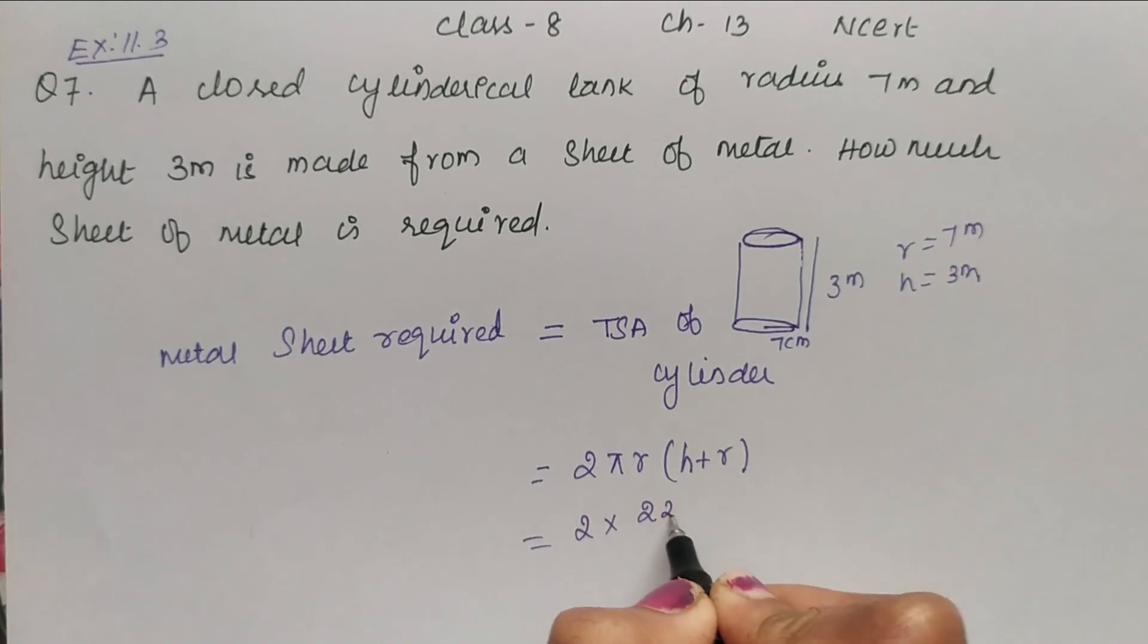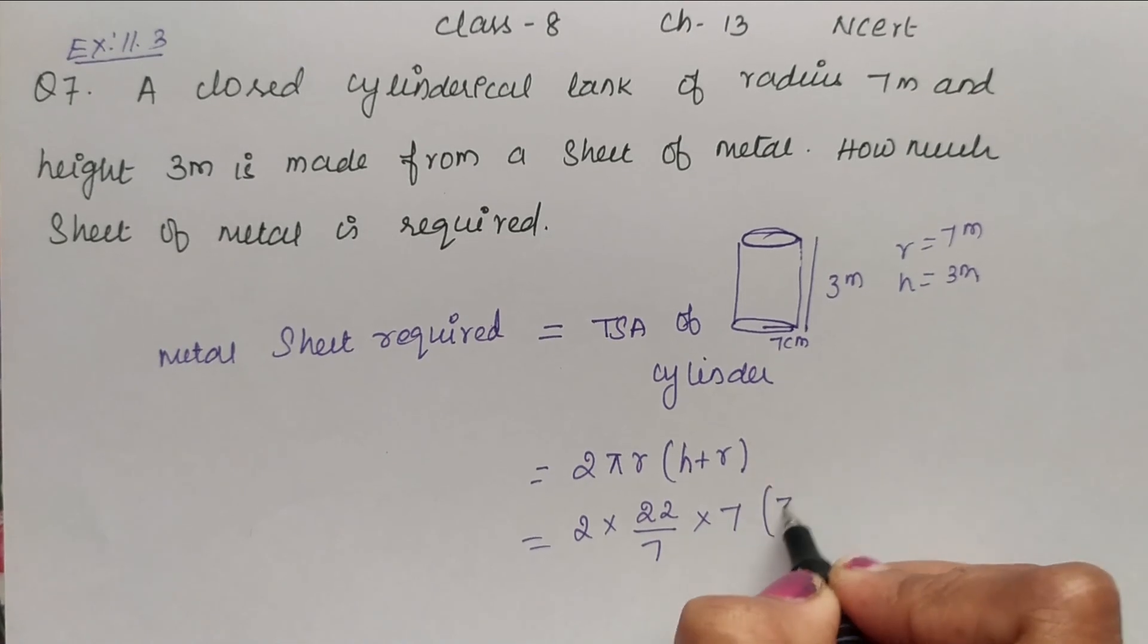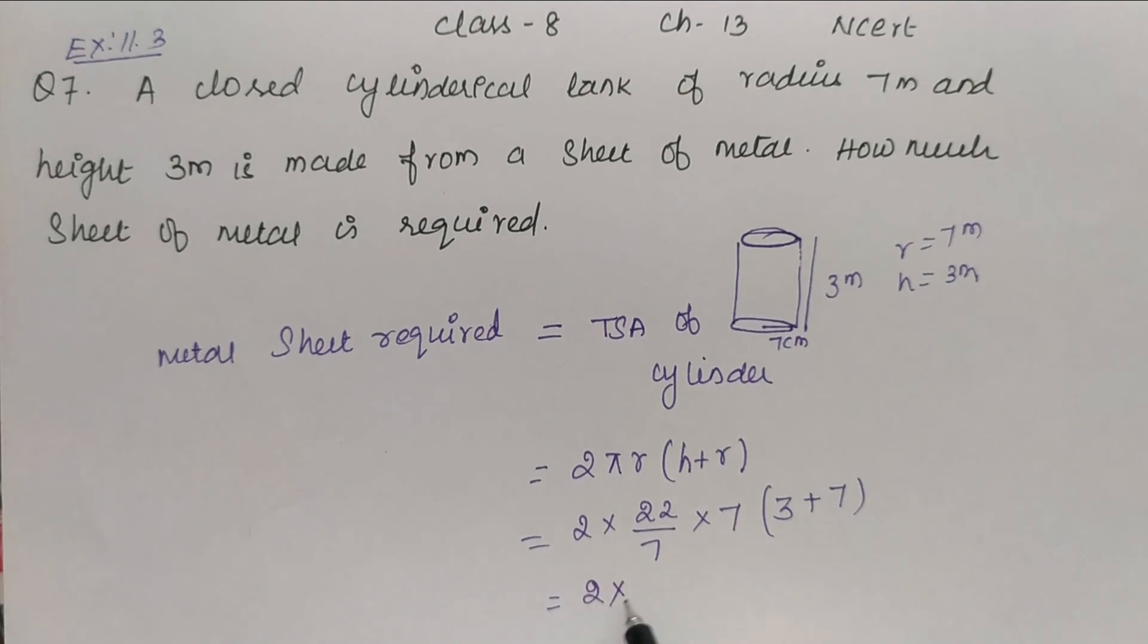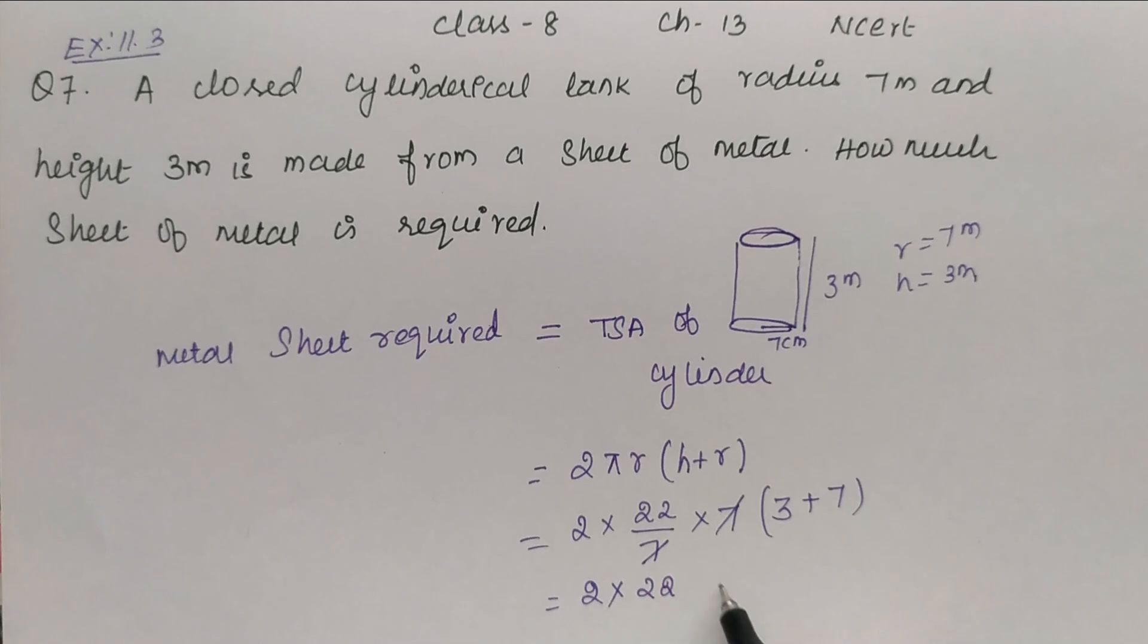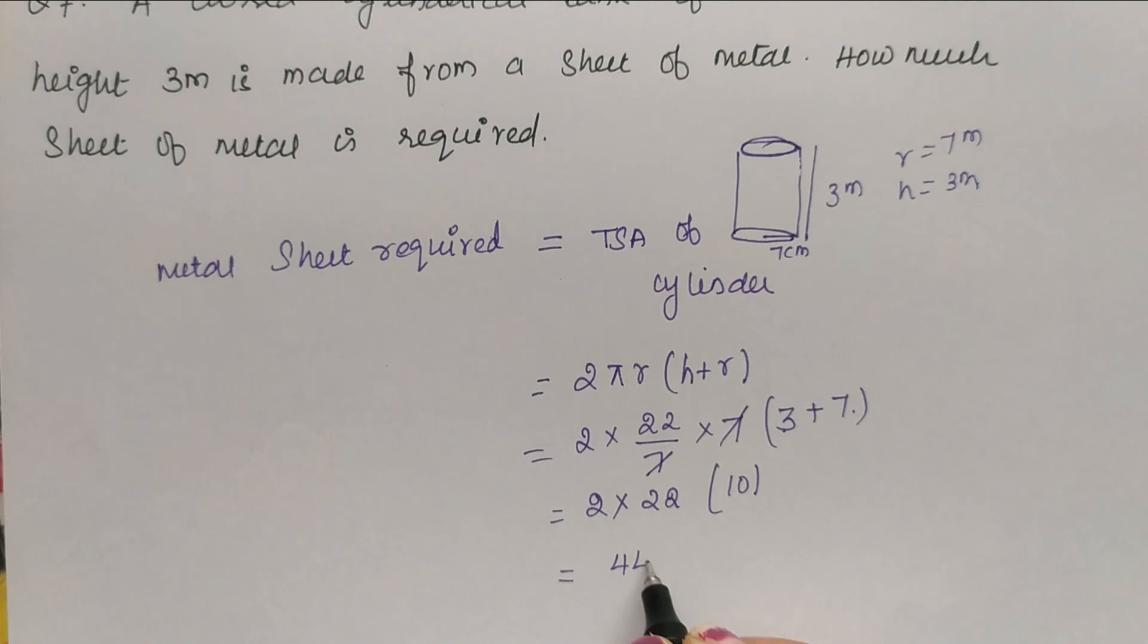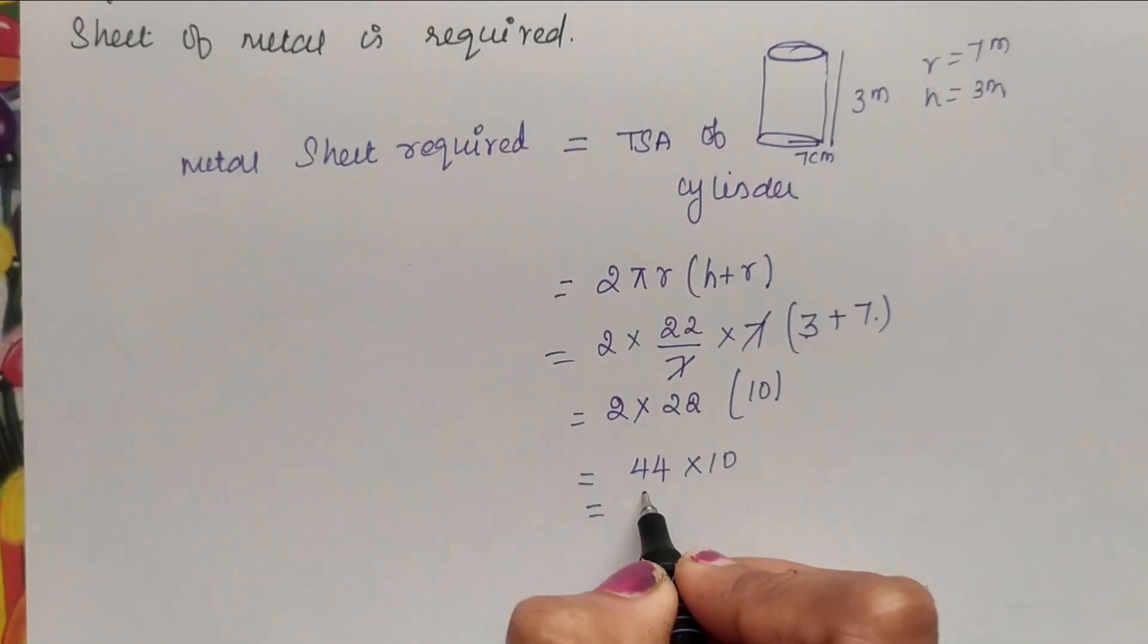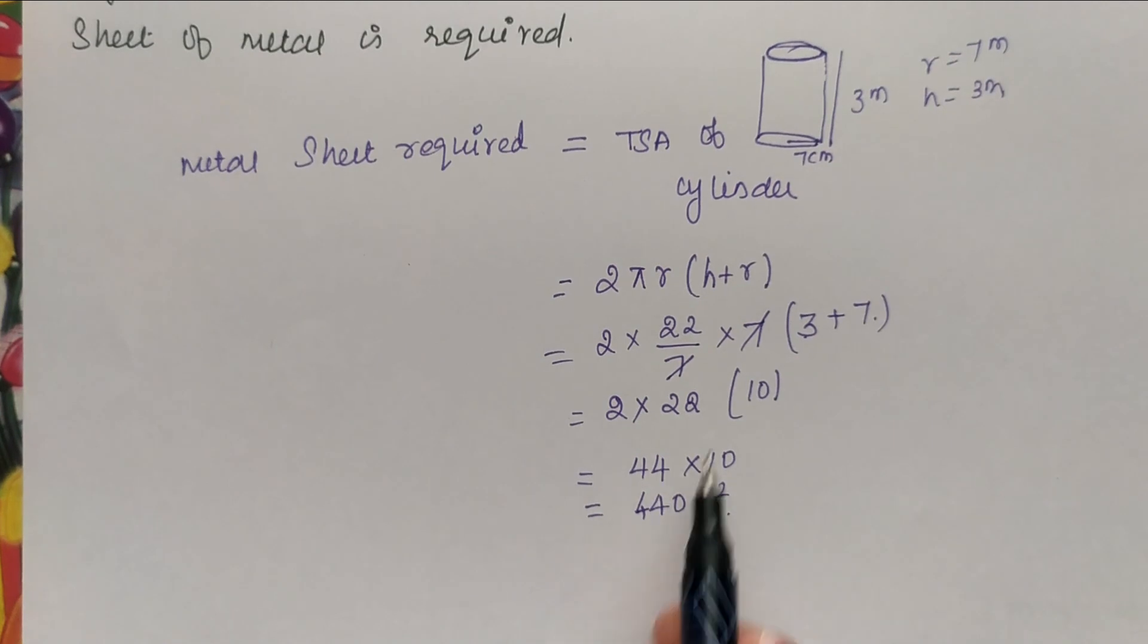2 into π is 22 by 7 and R is 7 meter into height is 3 meter plus R is 7. So 2 into 7 and 7, 22 into 3 plus 7 is 10. So 2 into 22 is 44, 44 into 10 is 440, 440 meter square. So the metal sheet required to make this cylinder is 440 meter square.